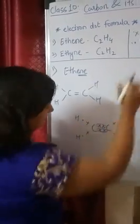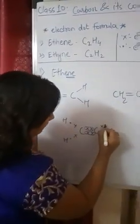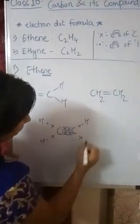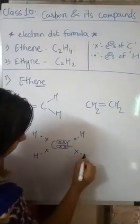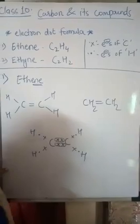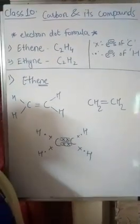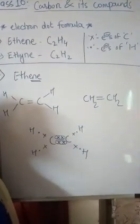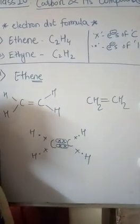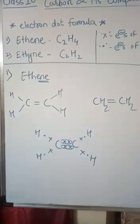The notations are written over here. This is the electron dot structure of ethene.